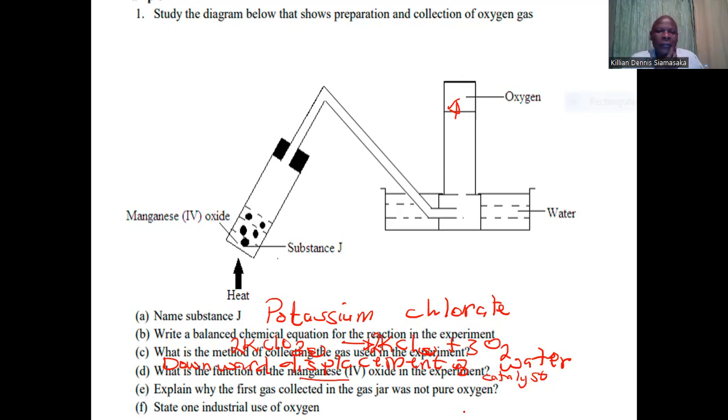Explain why the first gas collected in the gas jar is not pure oxygen. It is actually contaminated with air already in the apparatus.